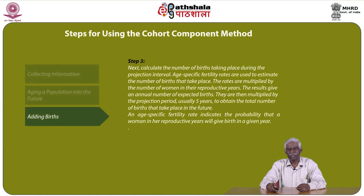The third step is adding births — that is, calculating the number of births taking place during the projection interval. Age-specific fertility rates are used to estimate the number of births. The rates are multiplied by the number of women in the reproductive years, and the results give an annual number of expected births. They are then multiplied by the projection period, usually 5 years, to obtain the total number of births. The age-specific fertility rate indicates the probability that a woman in her reproductive years will give birth in a given year.